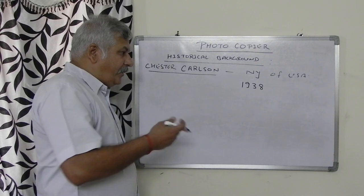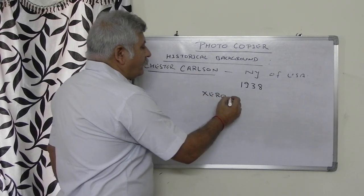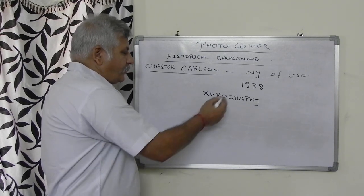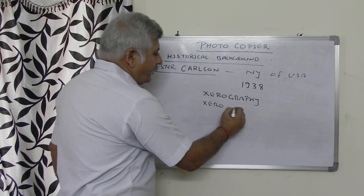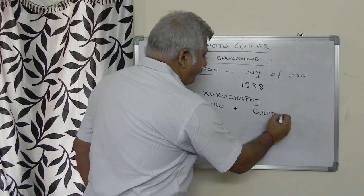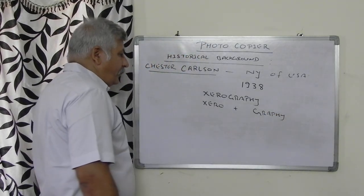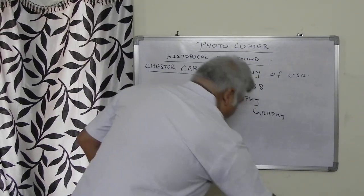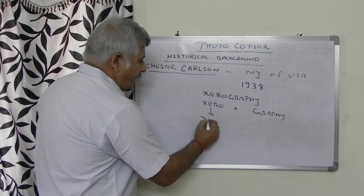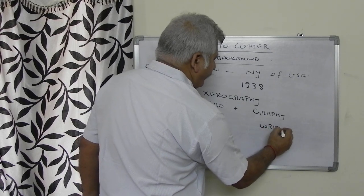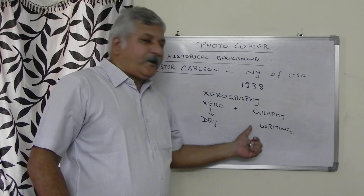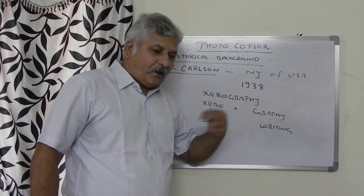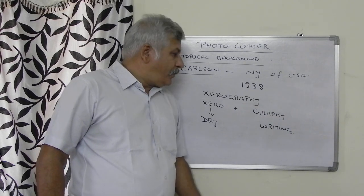He gave the name to that machine as Xerography. Xerography is a combination of two words: 'xero' and 'graphy'. Xero is a Latin word meaning dry, and graphy means writing. So he invented a machine which can be used for dry writing and for making multiple copies.